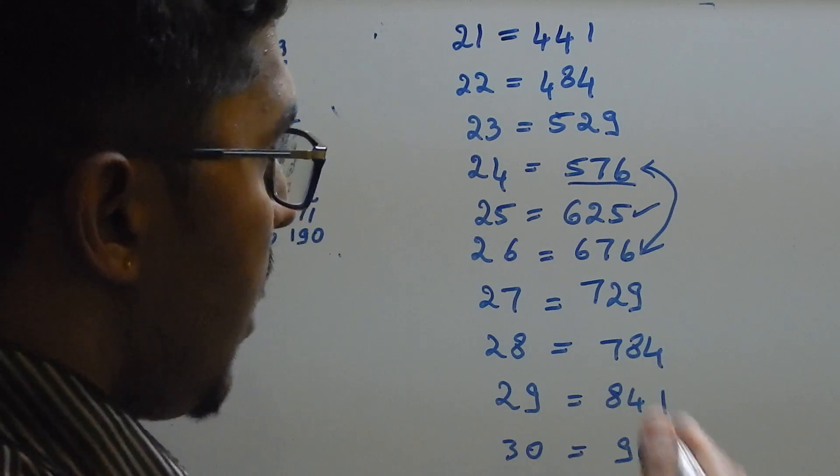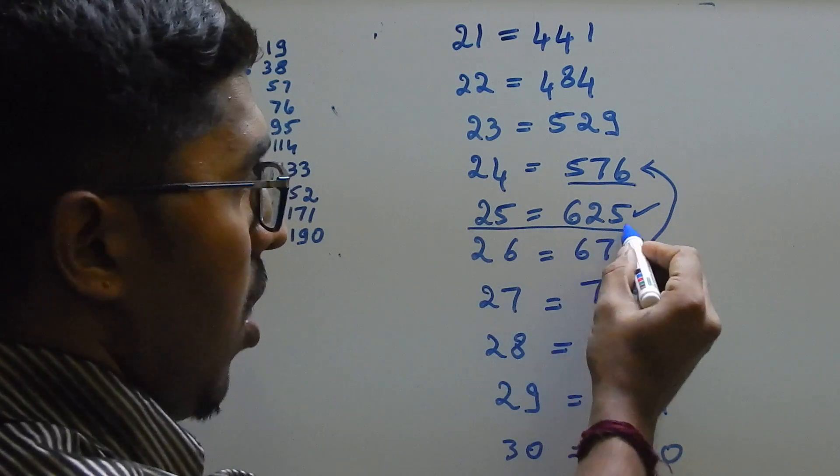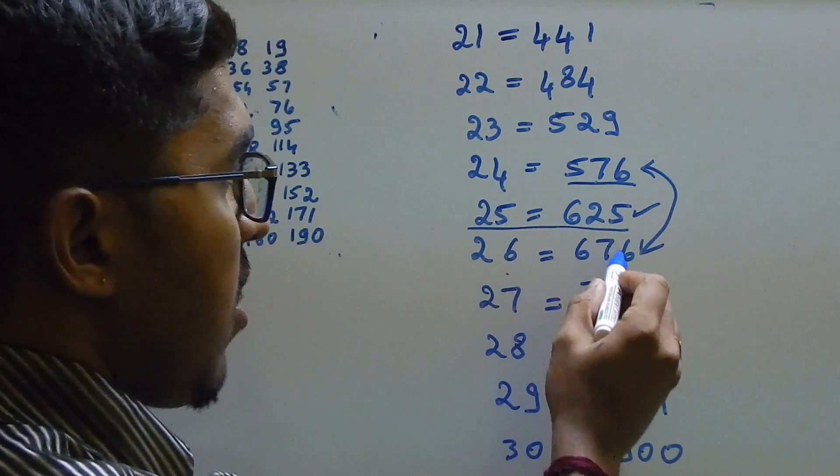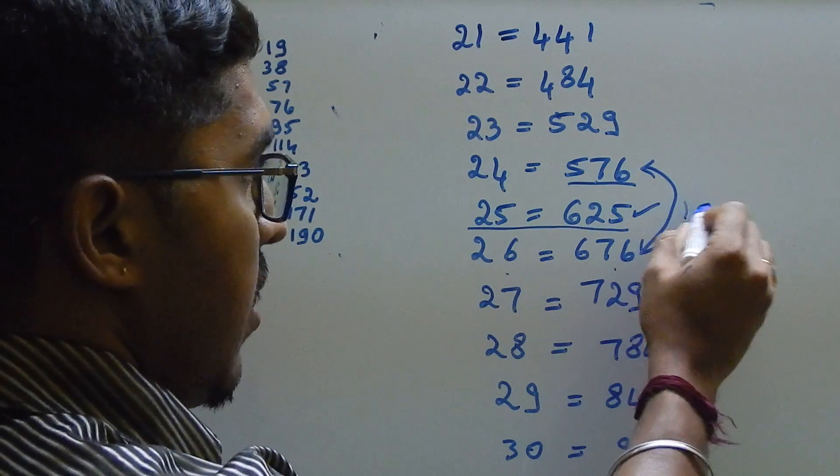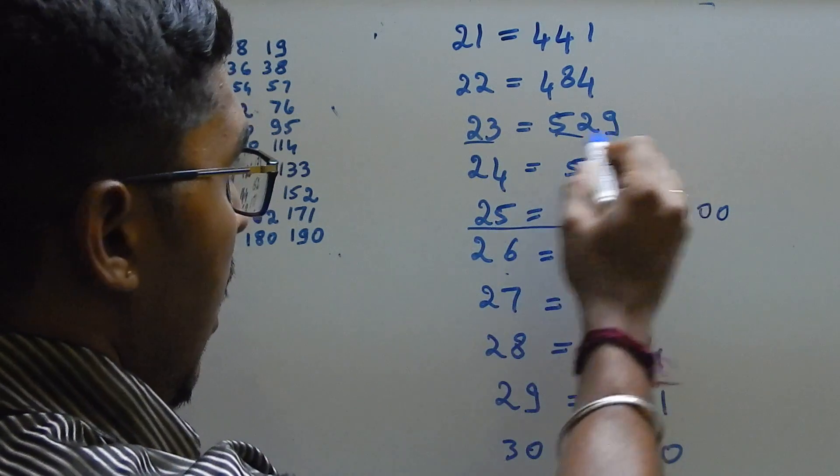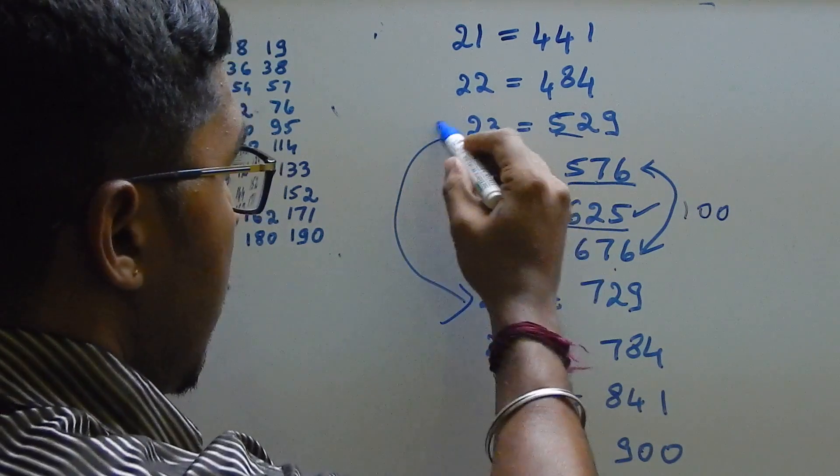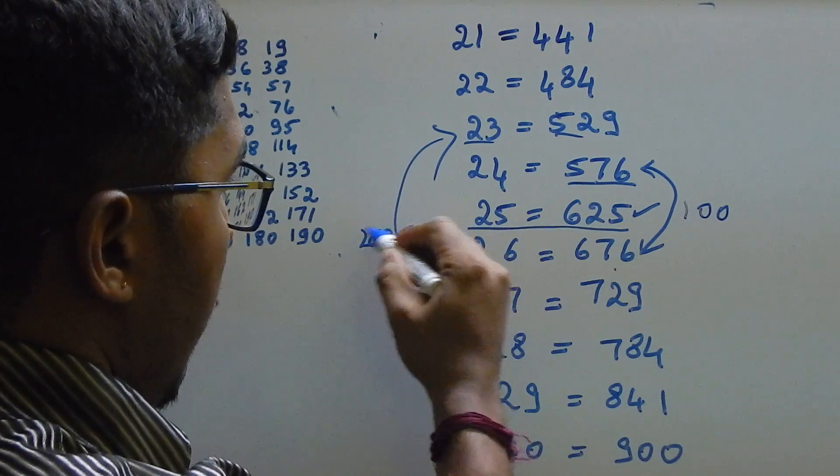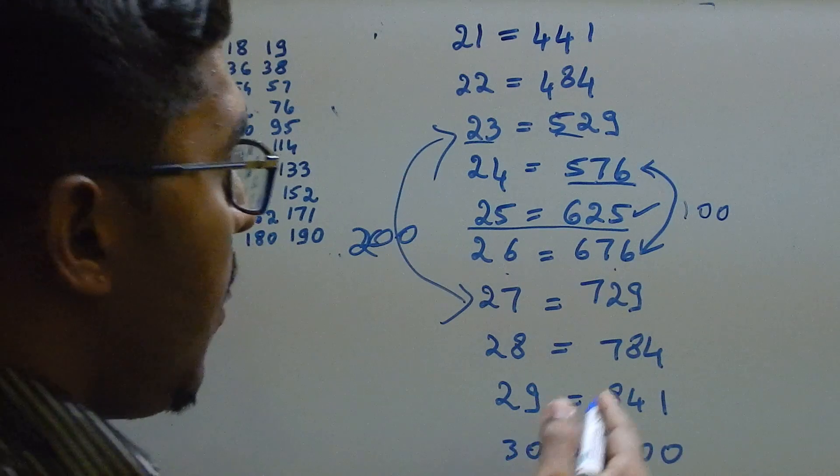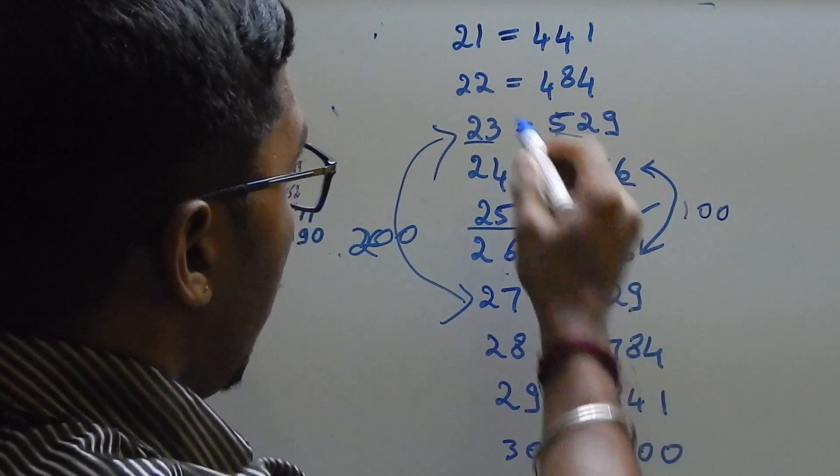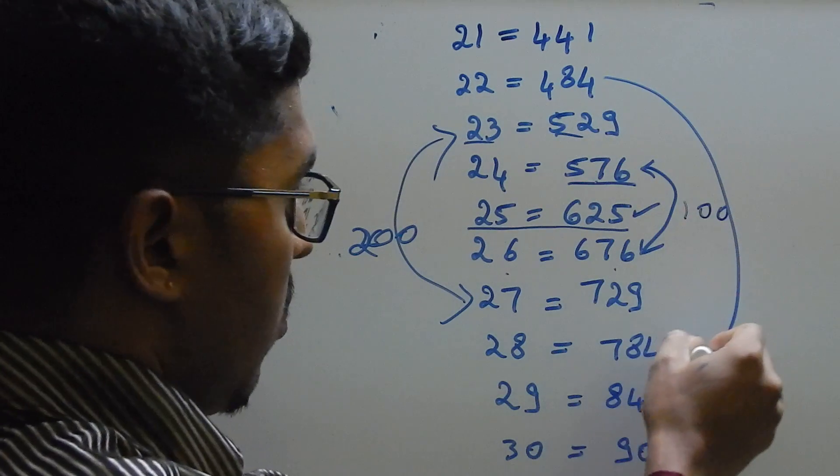Now we can see 25 square we know already 625, 24 square 576, 26 square 676 - only 100 difference. Then 23 square is 529 and 27 square is 729, almost 200 difference. You can observe here. And 28 square is 784, 22 square is 484, here also. How much difference? 300 difference. 484, 784.